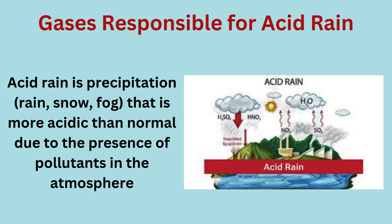Gases responsible for acid rain. Definition: acid rain is precipitation — rain, snow, fog — that is more acidic than normal due to the presence of pollutants in the atmosphere.